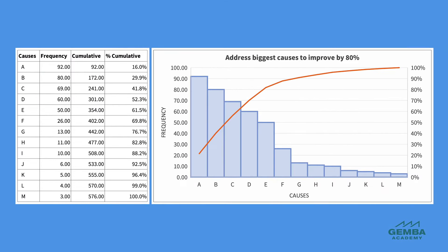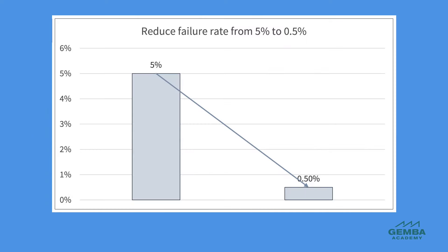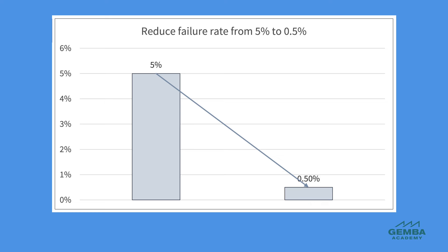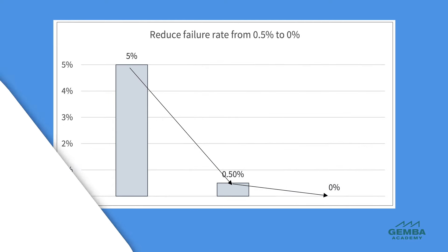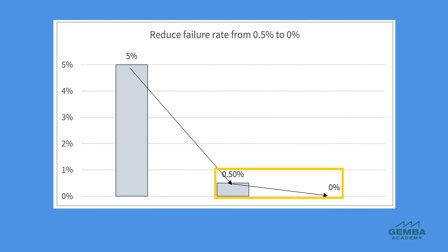Another difference is that conventional root cause problem solving may target a 50% or even 80% reduction in a problem, taking action on the most visible and highest priority areas. Often, quality improvement teams may succeed in reducing defects or failures from 5% to 0.5% using conventional or common sense techniques such as 5Y analysis. The team may struggle to find clear causes to reduce the last half percent. This is where P-M analysis is helpful.